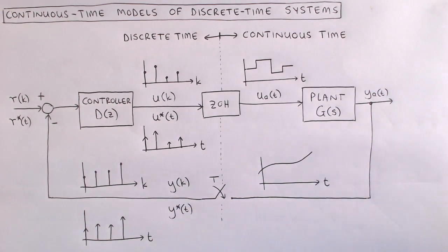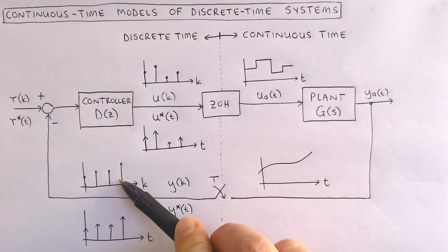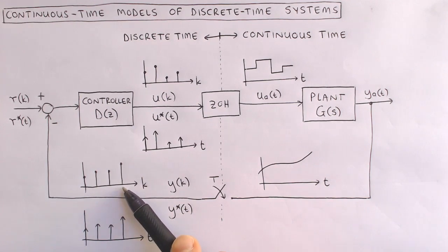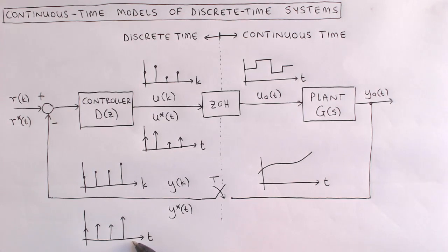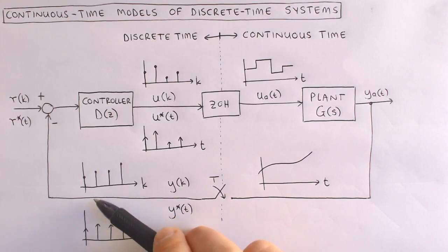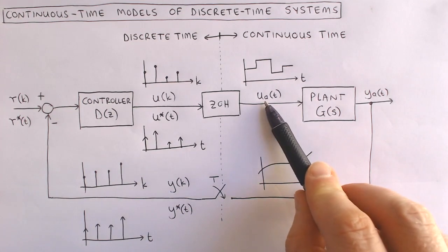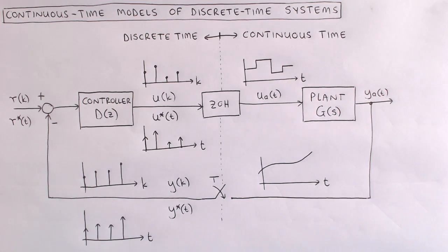There are two equivalent models of digital signals. The one is a purely digital signal that is only defined at the discrete time instance k. The other is a train of impulses that is defined for all time. The weights of the impulses are the same as the corresponding values of the purely digital signal. The impulse train formulation is denoted with an asterisk. In this diagram, a subscript a denotes an analog signal. To find a continuous time model of the discrete time parts, we use the impulse train model of discrete time signals.